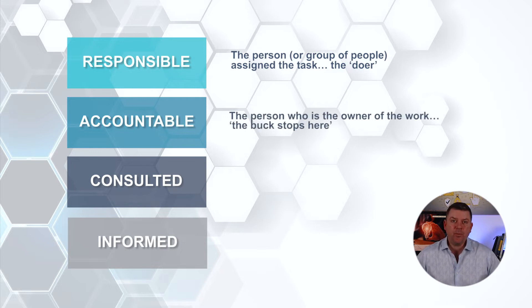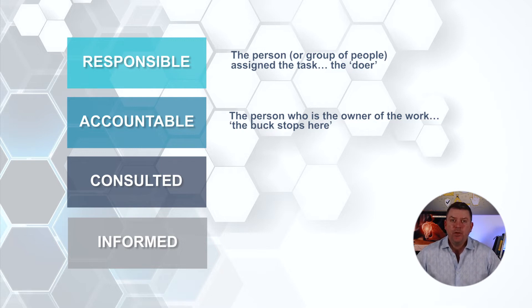Accountable: this is the person who is the owner of the work. They usually sign off when the task, objective or decision is complete. Usually there's only one person accountable, which means that the buck stops with this individual.